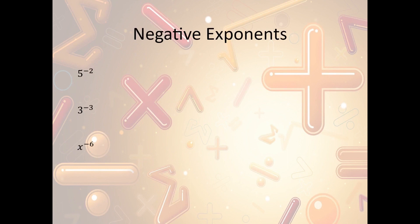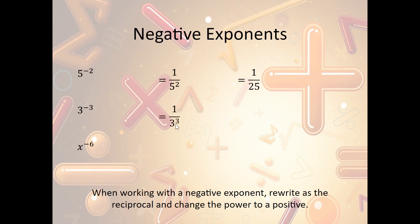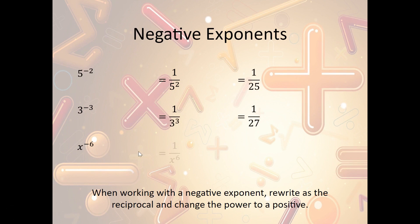Now let's take a look at negative exponents. A negative exponent looks like this: 5 to the negative second power. The rule with negative exponents is we're going to rewrite as the reciprocal. Instead of 5 to the negative second, we write it as 1 over 5 squared — we make the power positive and put it under 1. So 5 squared is 25, giving us 1 over 25. Then 3 to the negative third power becomes 1 over 3³, which is 1 over 27. And x to the negative sixth power becomes 1 over x⁶.